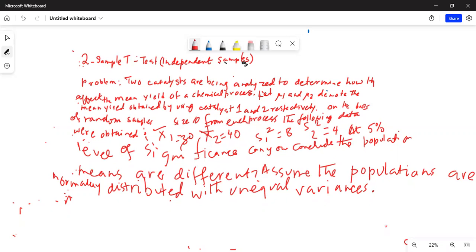Two catalysts are being analyzed to determine how they affect mean yield of a chemical process. Let mu1 and mu2 denote the mean yield obtained by using catalyst 1 and 2 respectively.